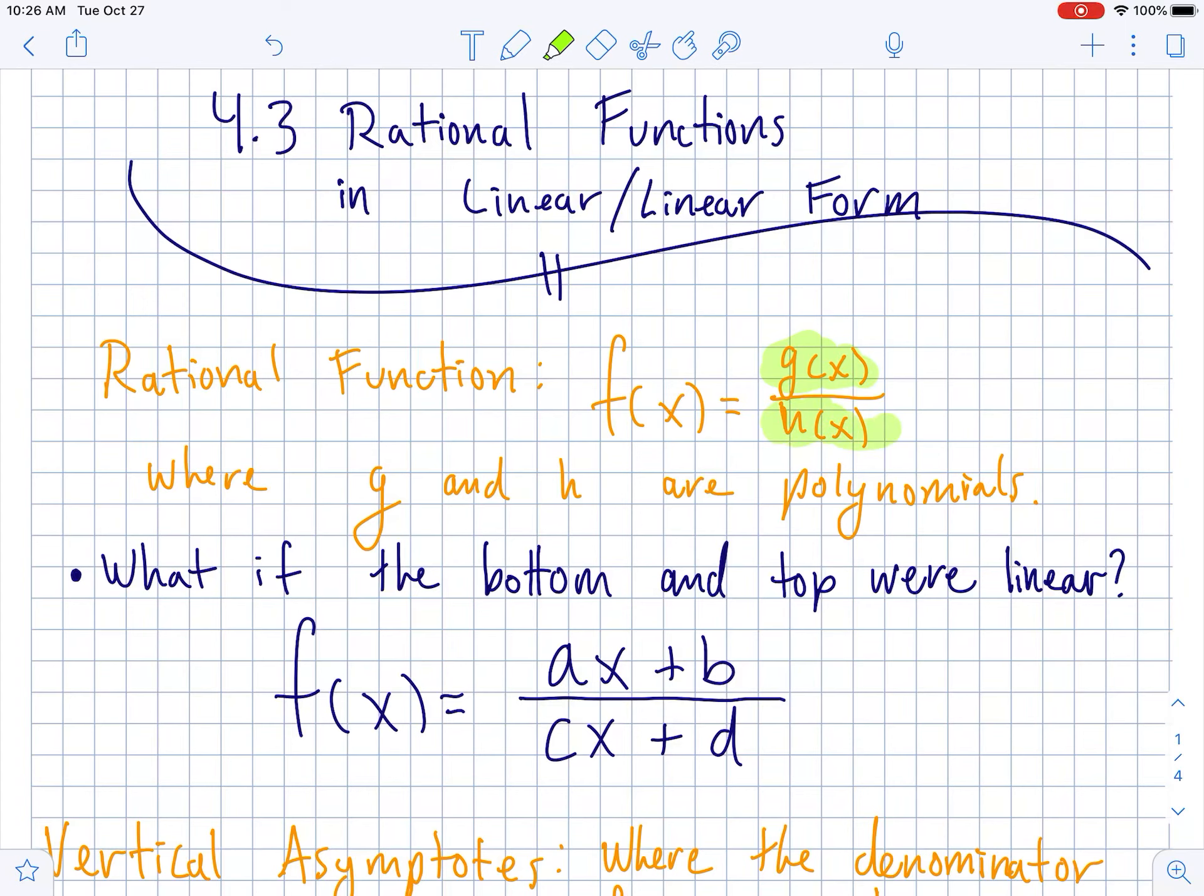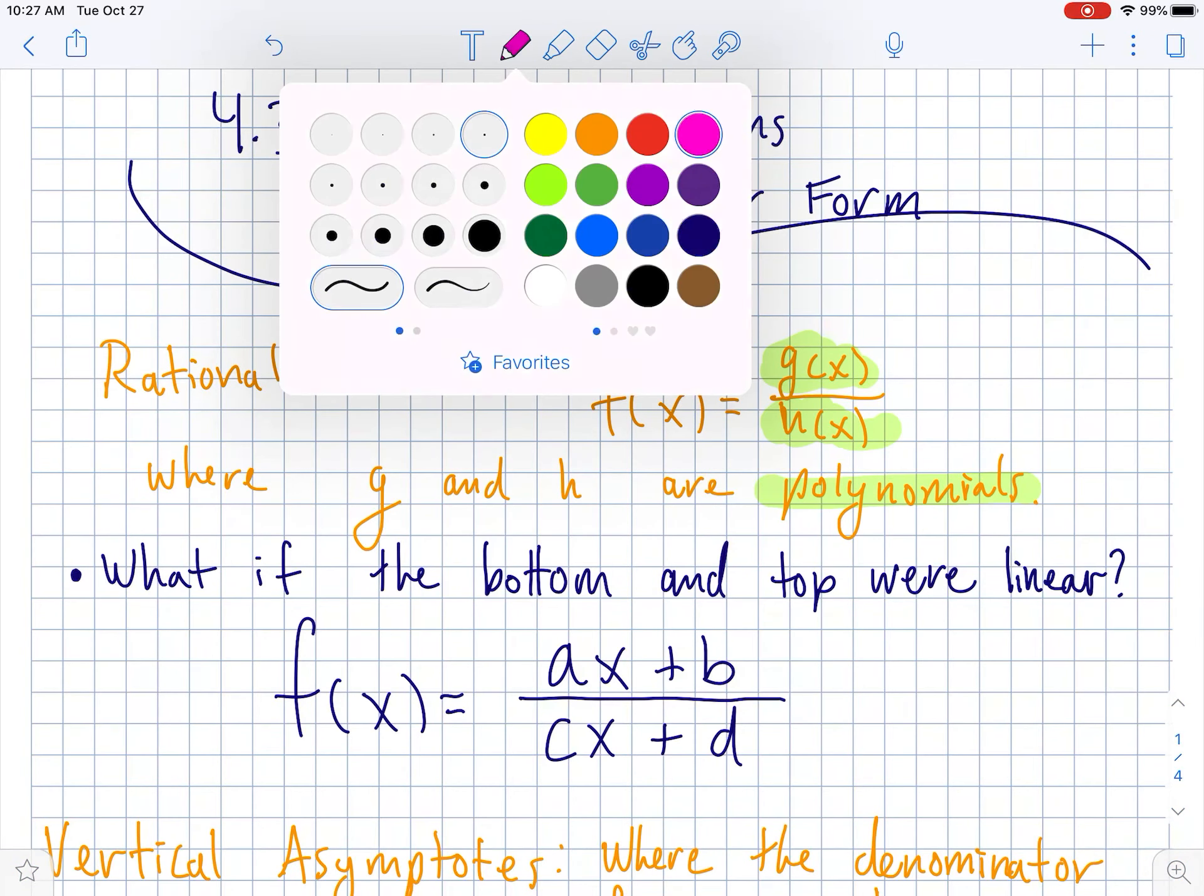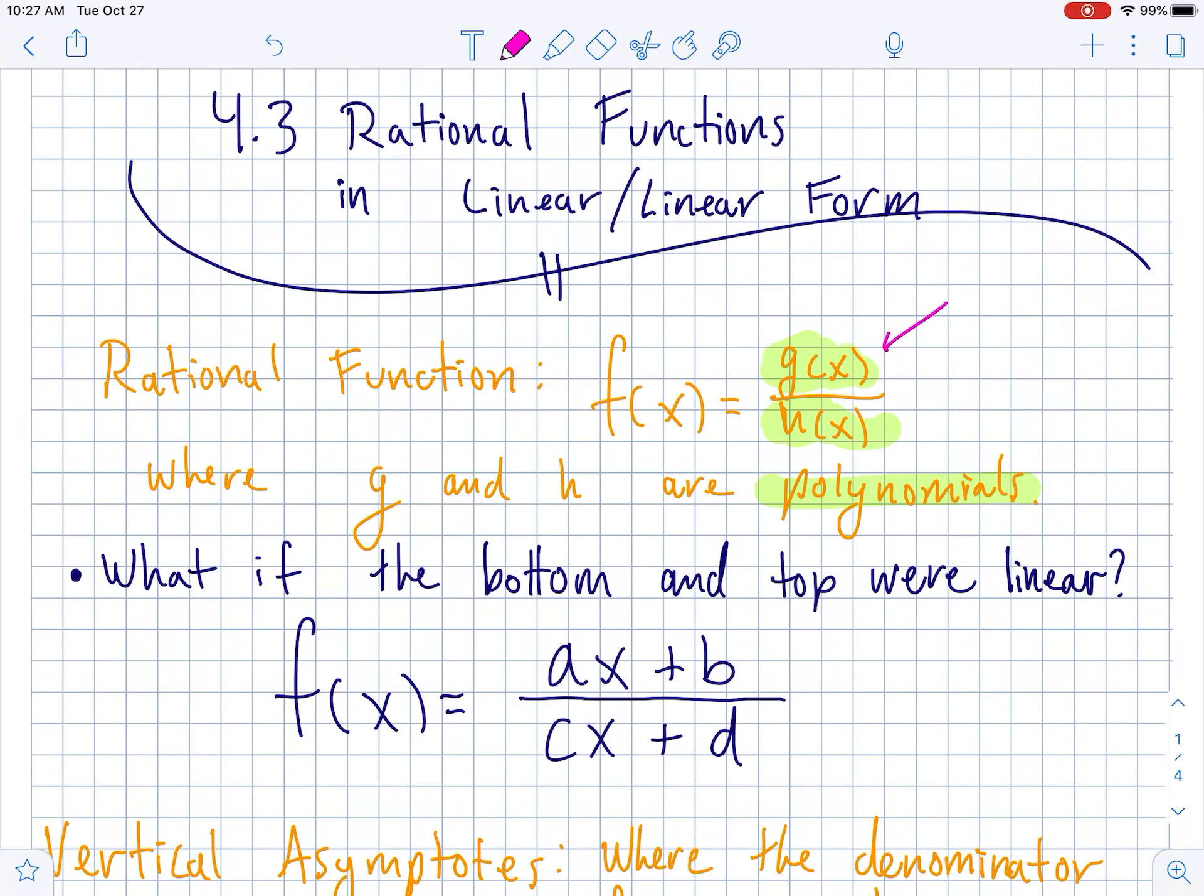let's talk about rational functions in general. Rational functions just means that it's some sort of function over a function. Those top and bottom functions can be any polynomials, so you could have like a quadratic over a quadratic, or like a linear over a cubic, or something like that. There's tons of different weird combos of rational functions, but today we're just going to talk about the top and bottom being linear functions.